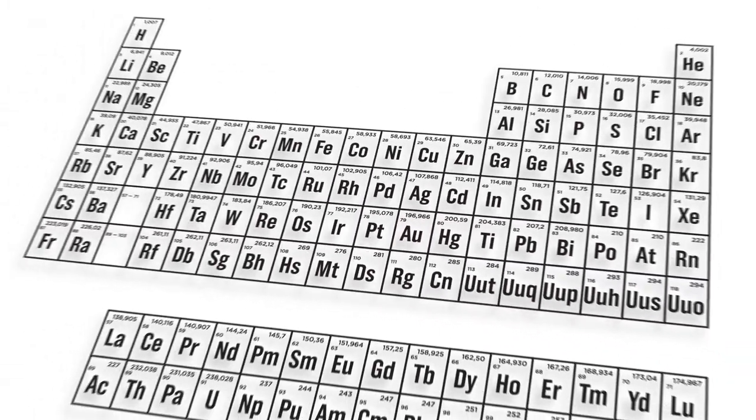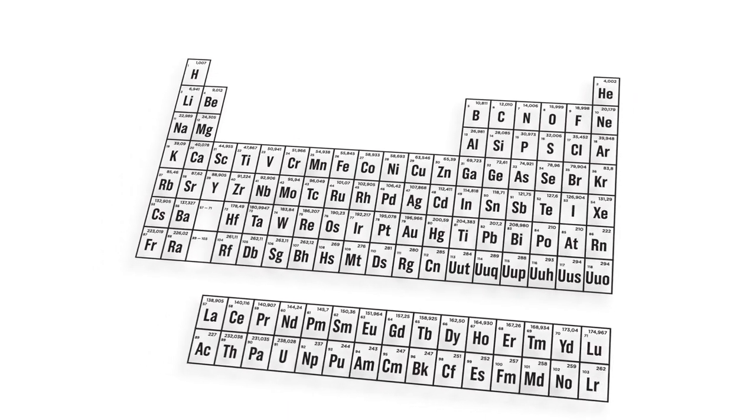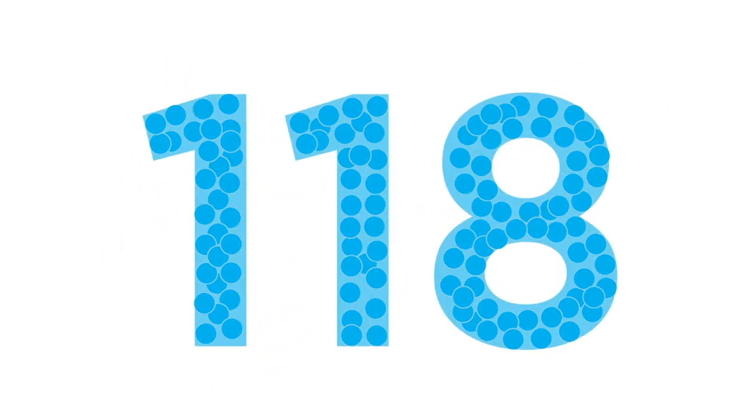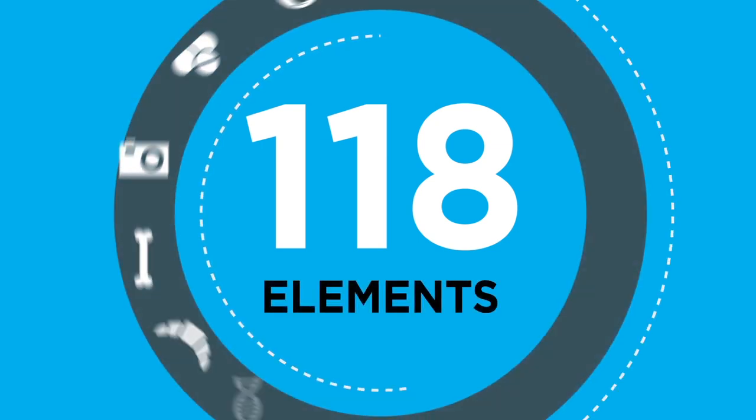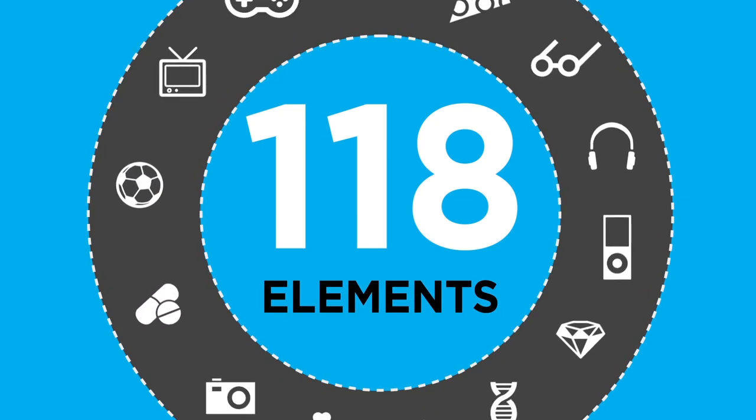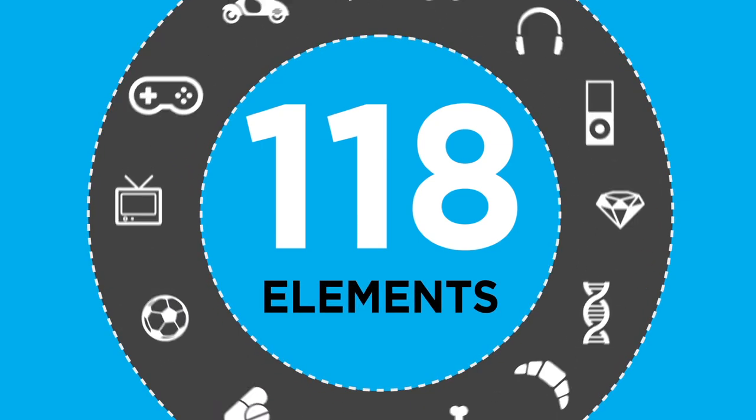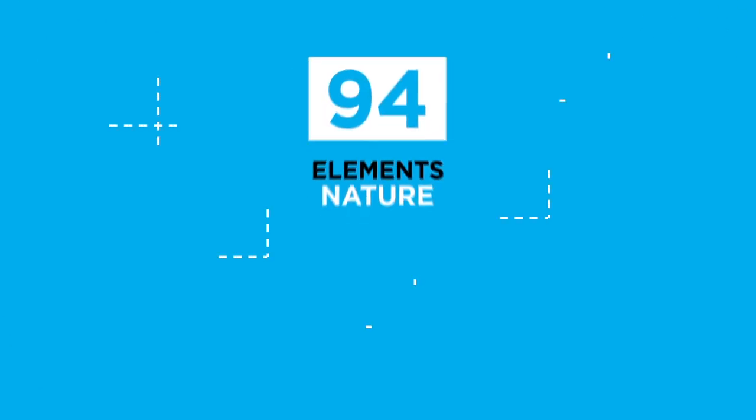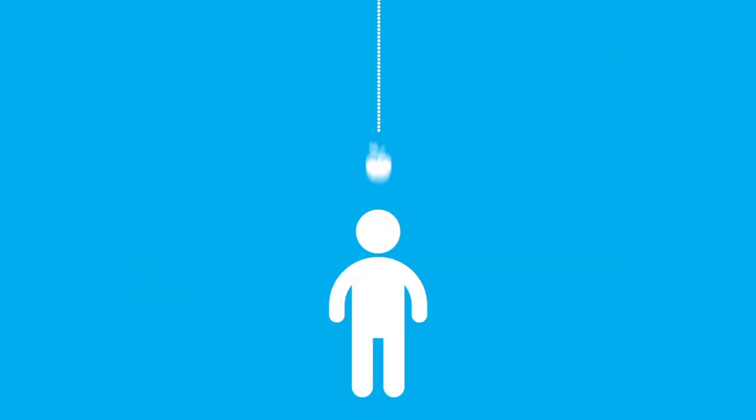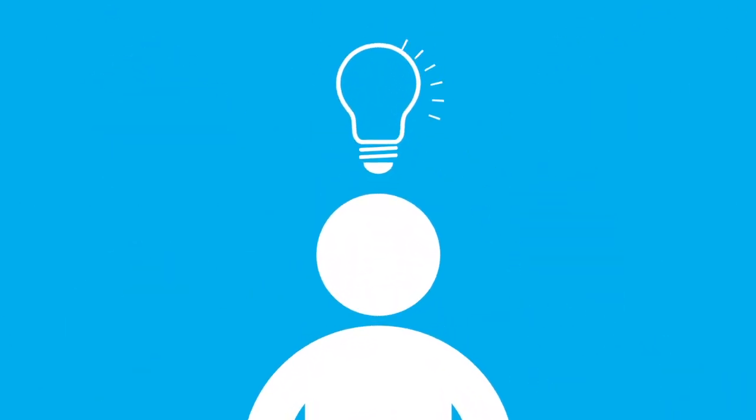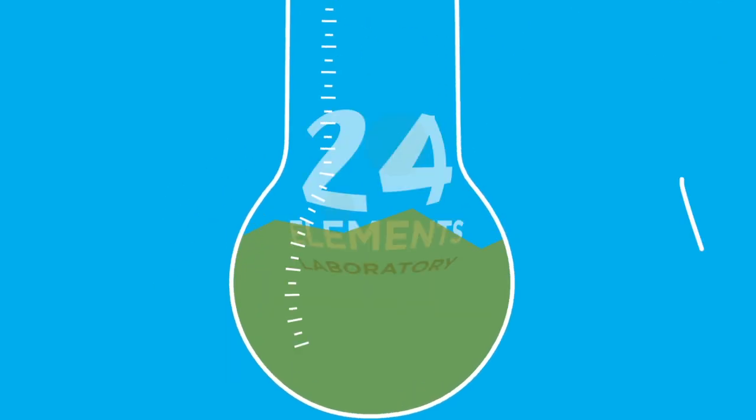But what exactly is the periodic table? The periodic table is a chart that represents all 118 chemical elements that constitute the known universe. Everything around us is made up of at least one of these elements. 94 of these elements can be found in nature, and the rest were obtained in laboratories.